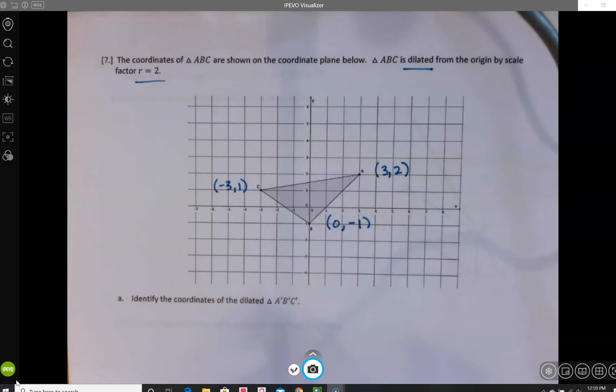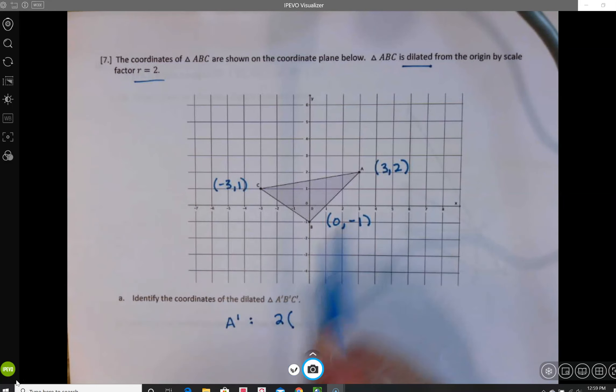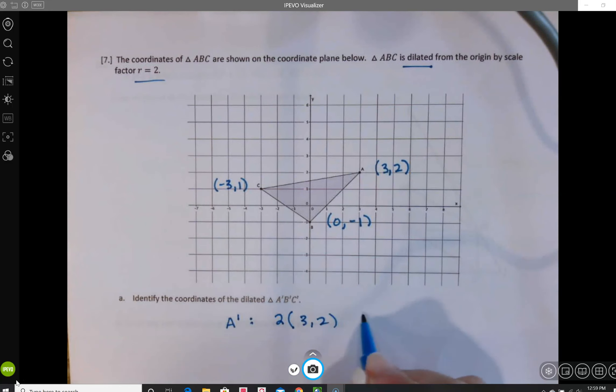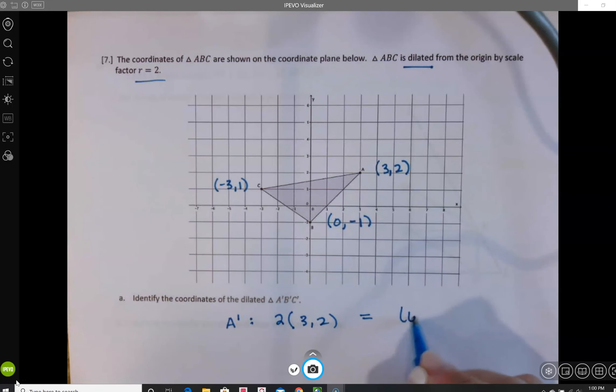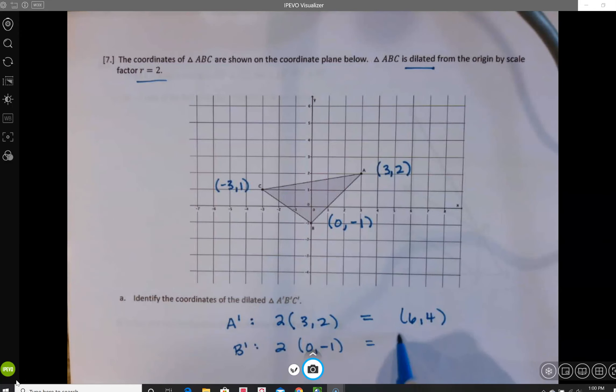To do the dilation, we're going to get A prime. We're going to take our r factor of 2 and multiply it by A. So we get 6 comma 4. To get B prime, we're going to do our scale factor of 2 times B. So 2 times 0 is 0 comma negative 2.